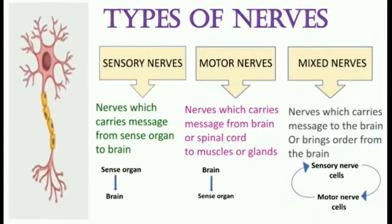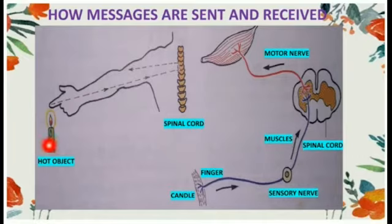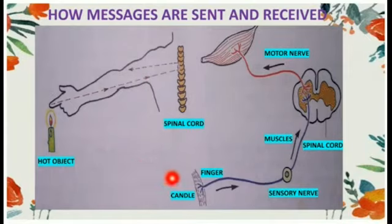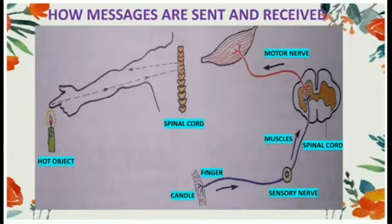Now we will see how nerves help in sending and receiving messages. When you come in contact with a hot object, such as a candle, the message is sent to the spinal cord through the sensory nerves.